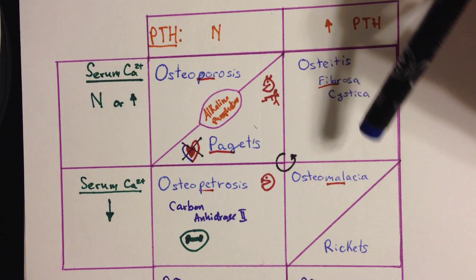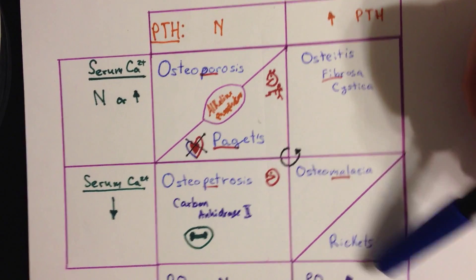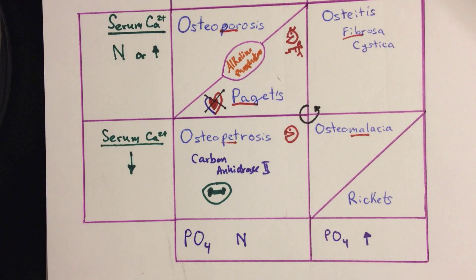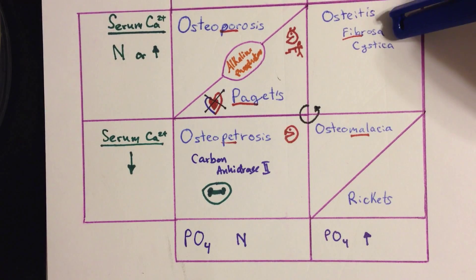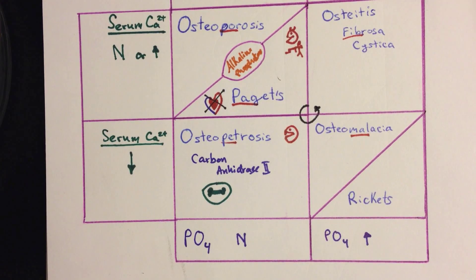Osteitis fibrosa cystica is unique in that everything is wrong: the PTH is elevated, the PO4 is elevated, and the serum calcium is typically high. It's caused by one of two pathologies — either a parathyroid carcinoma or a renal complication causing too much PTH. The body gets signals to have osteoclasts eat all the bone because it thinks it doesn't have enough — a false signal — leading to utter destruction of the patient's bone and ultimately fibrosis replacing where the bone used to be.